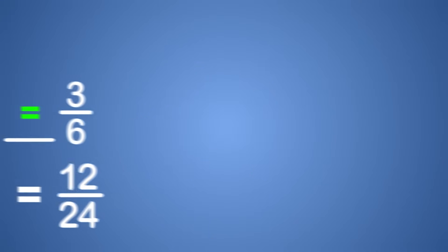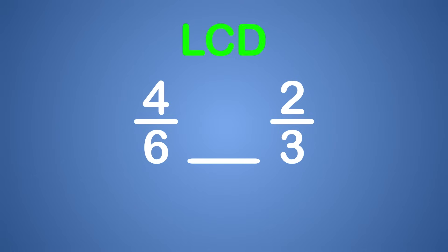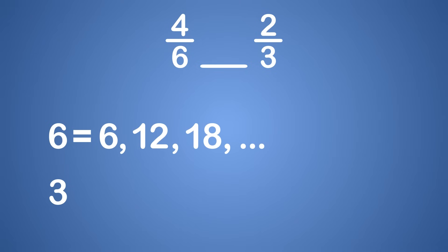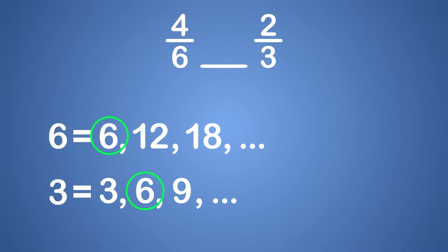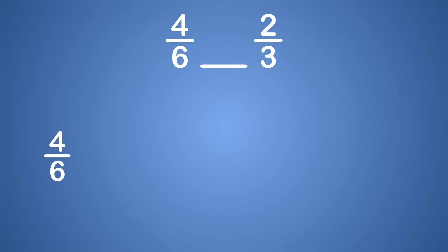Let's look at another problem. Let's compare these two fractions: 4 sixths and 2 thirds. Which one is larger? Let's start by finding the LCD, or least common denominator, for 6 and 3 by listing some of their multiples. Some multiples of 6 are 6, 12, 18 and so on. Some multiples of 3 are 3, 6, 9 and so on. The least common multiple of 6 and 3 is 6. Now we know the least common denominator to use. But wait — 4 sixths already has a denominator of 6, so we don't have to touch this fraction.